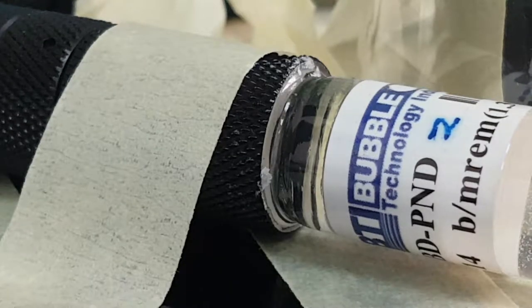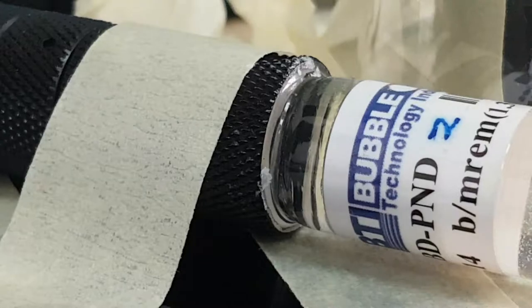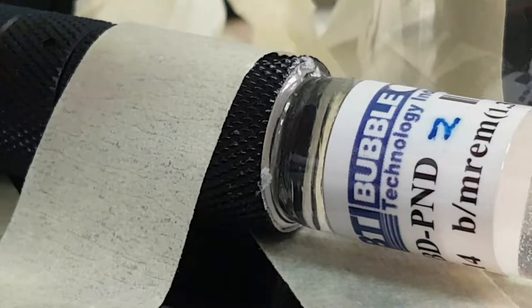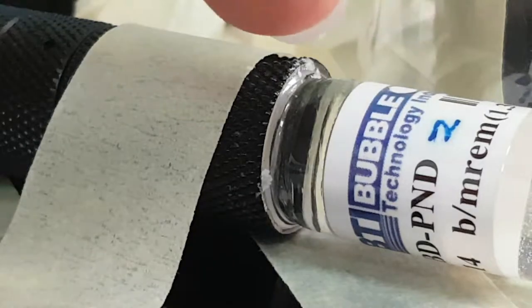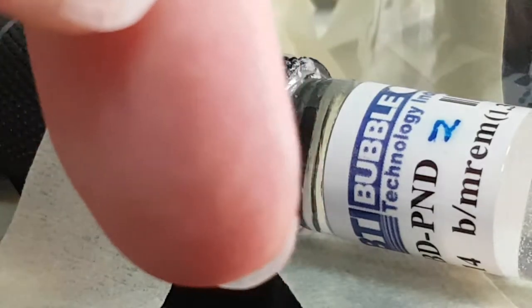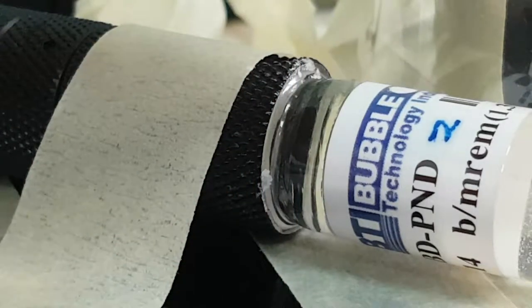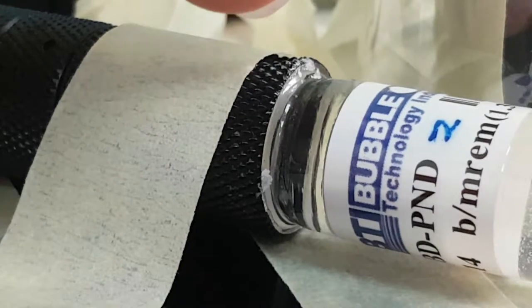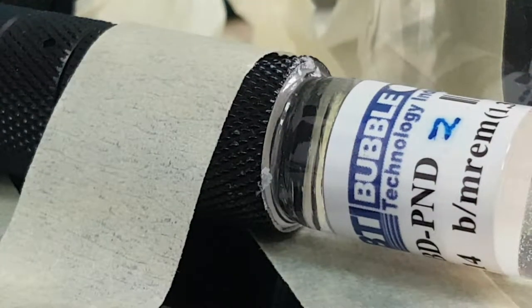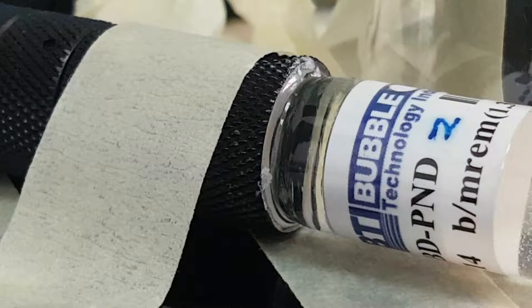More worryingly is that the seal on the bubble detector on this side is also starting to degrade, so you might be able to see here around to here. There are bits of the seal that seems to be degrading, and I'm a bit concerned about that. I've not seen that before.